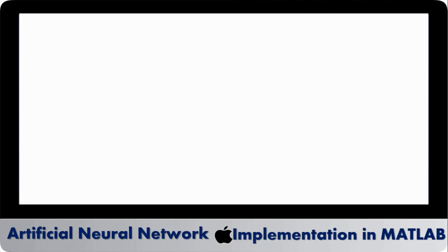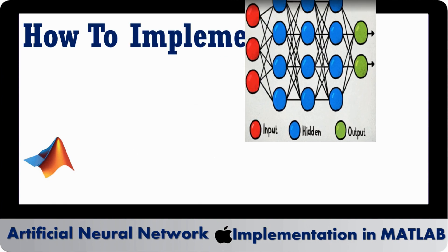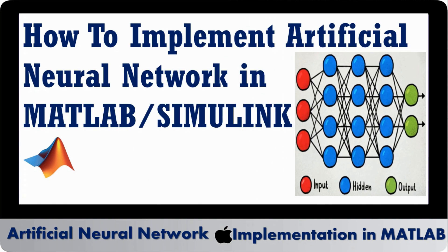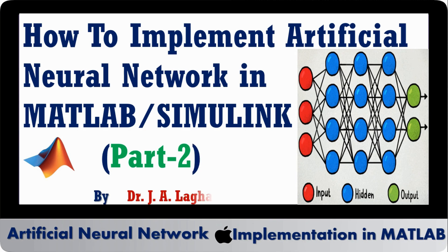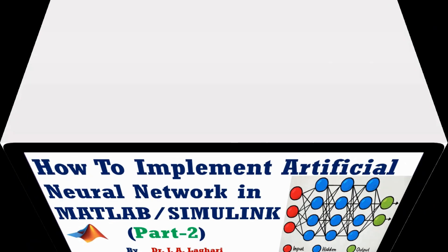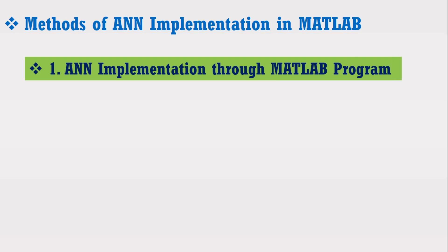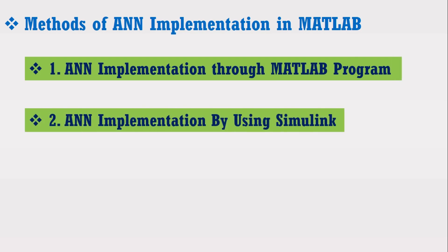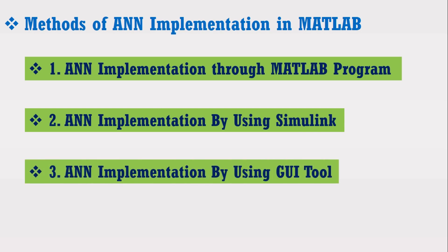Assalamu alaikum. Welcome to the second part of the series on how to implement Artificial Neural Network in MATLAB Simulink Software. Today I am going to teach you how to implement ANN in MATLAB. In MATLAB, Artificial Neural Network can be implemented by one of the following ways: ANN can be implemented through MATLAB program, by using Simulink, or by using the GUI tool.